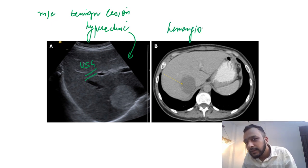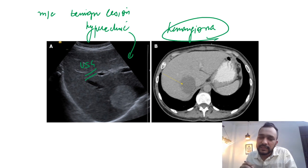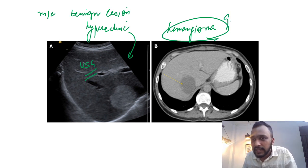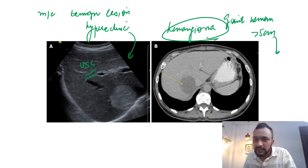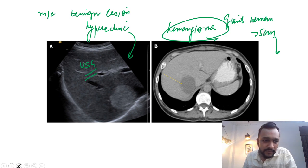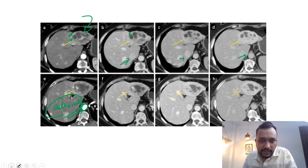One important point from the surgery perspective: giant hemangiomas more than 5 cm in size can result in consumptive coagulopathy.